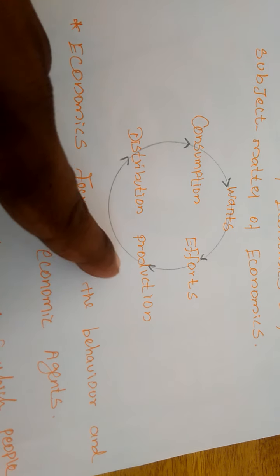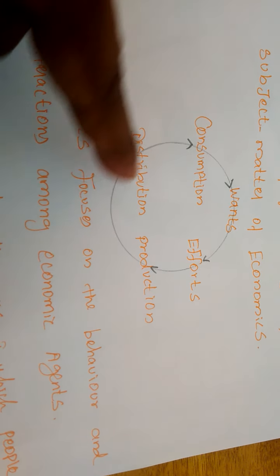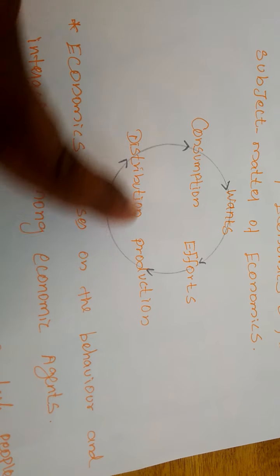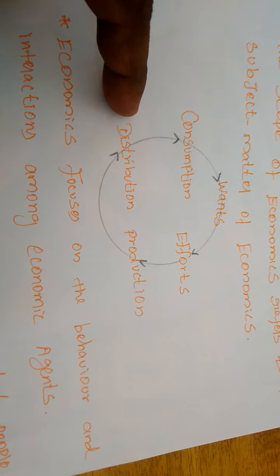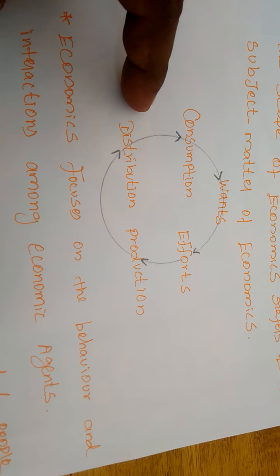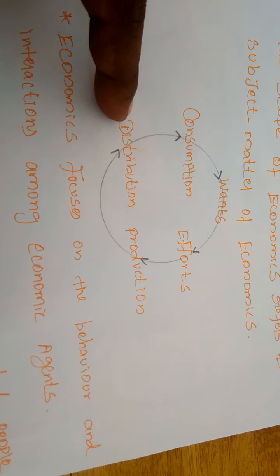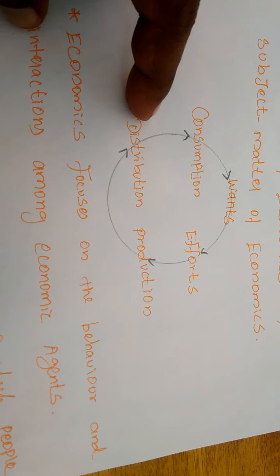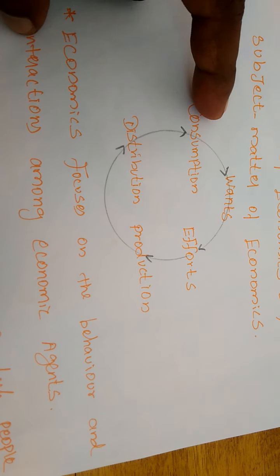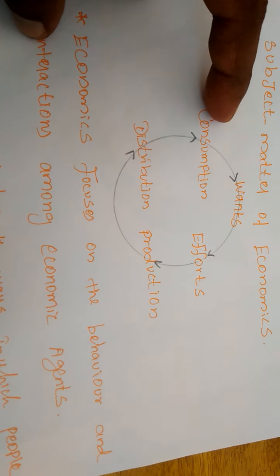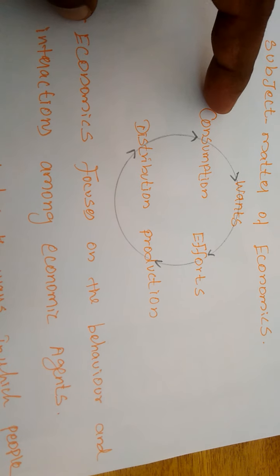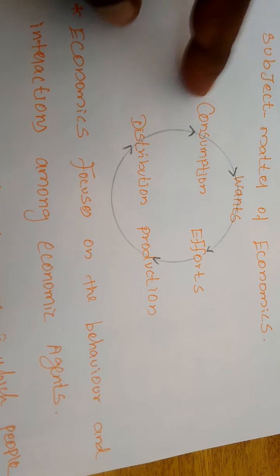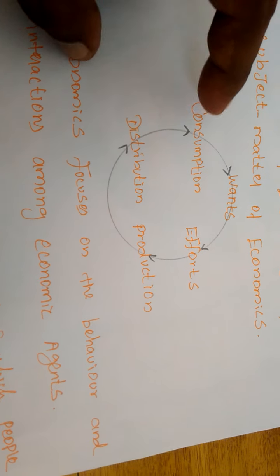The channel of distribution comes after producing the commodities. For the purpose of reaching the consumer, distribution activity takes place after production. After distribution, all produced commodities reach the hands of the consumer. After consuming that commodity, the consumer gets some satisfaction.